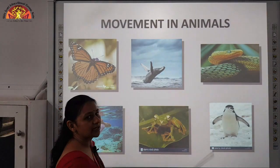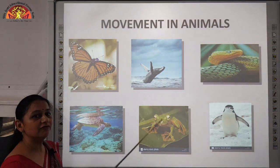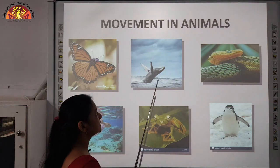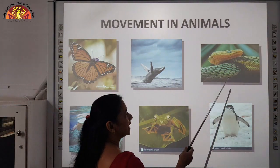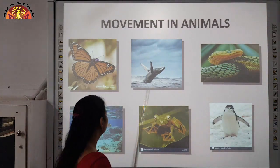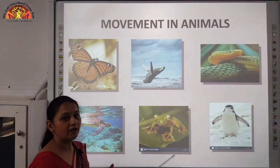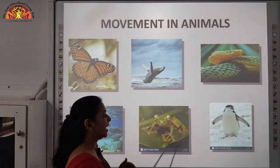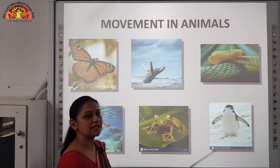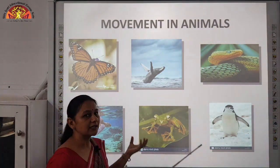Next topic is movement in animals. Different animals have different organs for movement. Butterflies and insects have wings which help them to fly. Whales and dolphins have fins which help them to swim in water. Reptiles like snakes have scales which help them to move. Frogs and ducks have webbed feet which help them to move in water, and frogs have hind legs which help them to hop. Penguins have flippers which help them to swim in water.